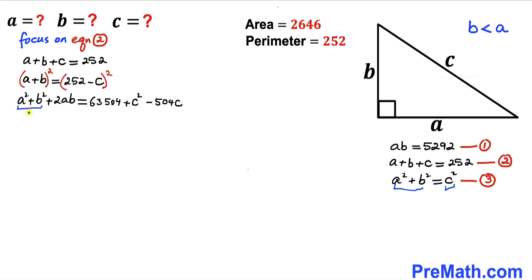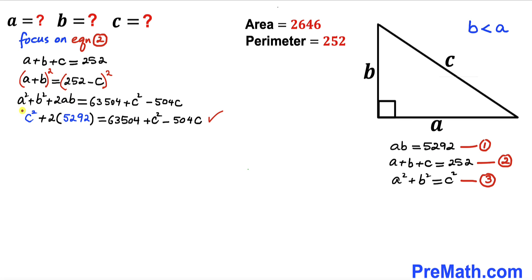We can now substitute: A squared plus B squared equals C squared from equation three, and A times B equals 5292 from equation one, so 2AB becomes 2 times 5292. The C squared terms on both sides cancel each other out, and simplifying gives us 2 times 5292 equals 10,584, so 10,584 equals 63,504 minus 504C.